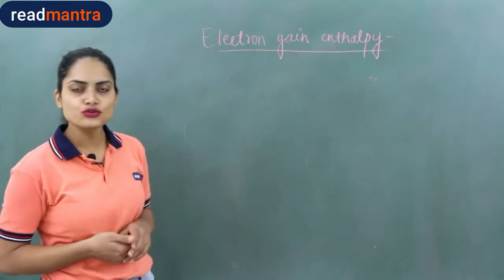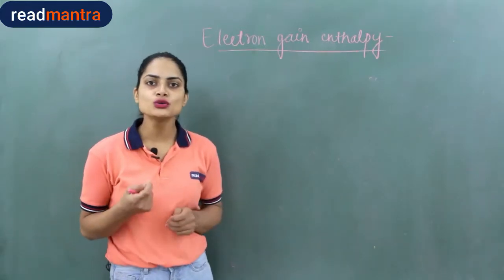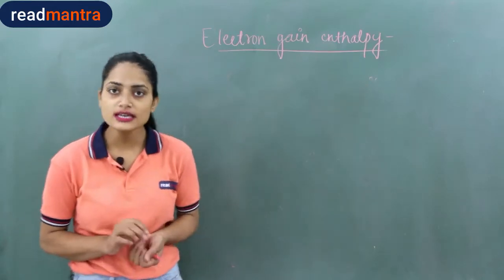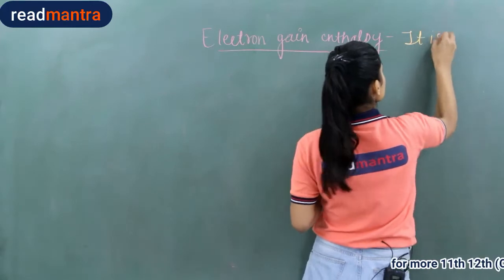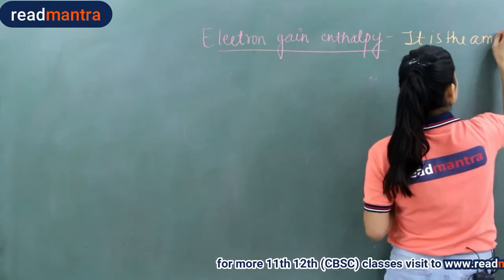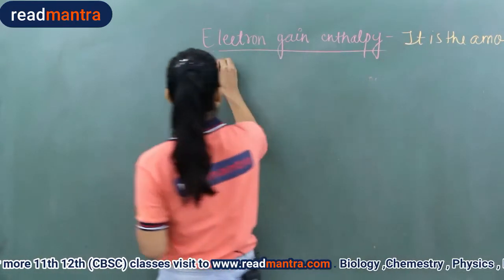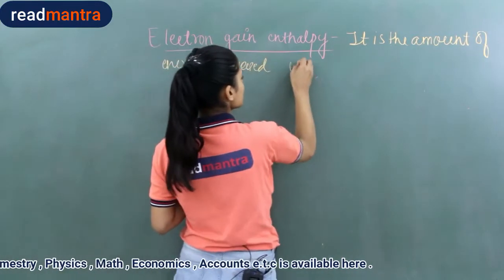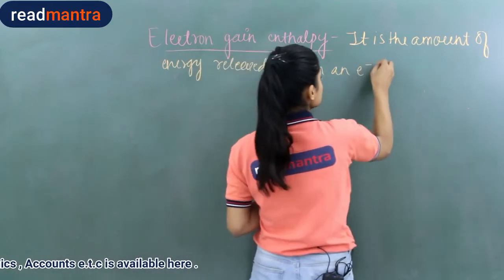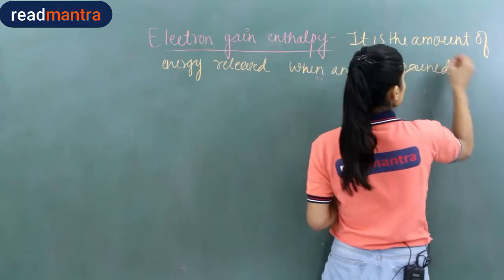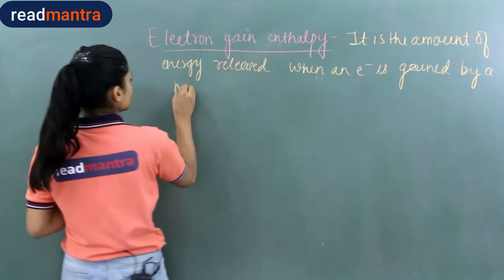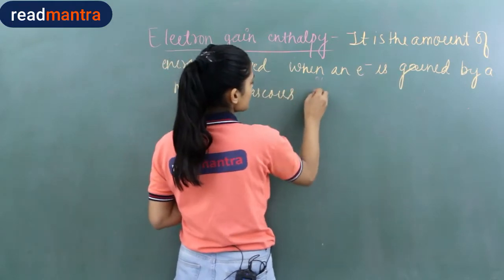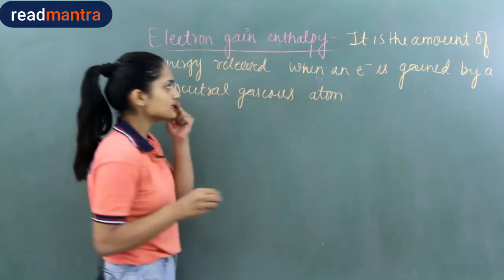Next is electron gain enthalpy. Electron gain enthalpy is the amount of energy released when an electron is gained by a neutral gaseous atom. When any neutral gaseous atom gains an electron, whatever energy is released, that is the electron gain enthalpy.